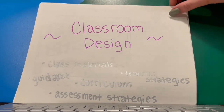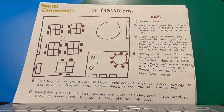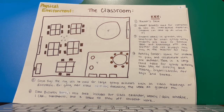Our classroom design: we've laid out a method that would work best for our dream classroom. Number one is the teacher's desk, which is somewhat insignificant. Number two is the smartboard, which is used for instruction as well as interactive materials — students can come up and write on it, practice writing, or fill in the blanks. You can also play games, and it brings student engagement.